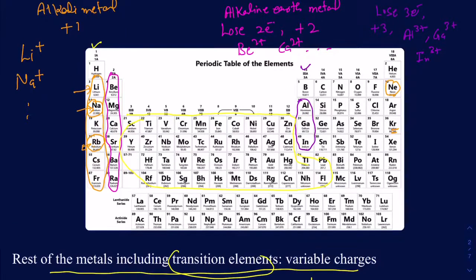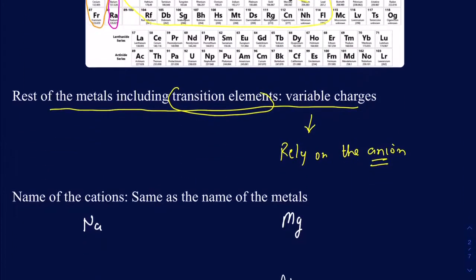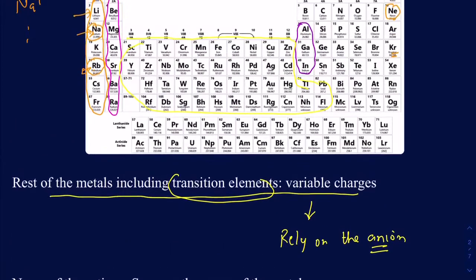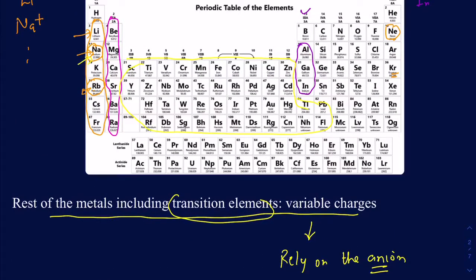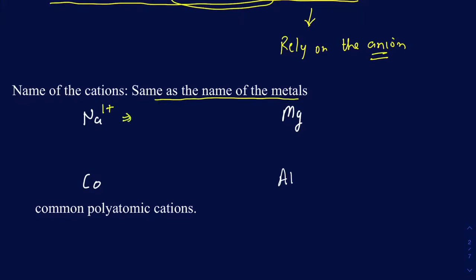So that's your metals: Groups 1, 2, and 3 have fixed charges; the rest have variable charges. Now, how do you actually name these cations? It's actually very easy. The name of the cation is the same as the name of the metal. For example, sodium is in Group 1A, so it loses one electron and has a 1+ charge. Na⁺ is just called the sodium ion — you don't really change anything.